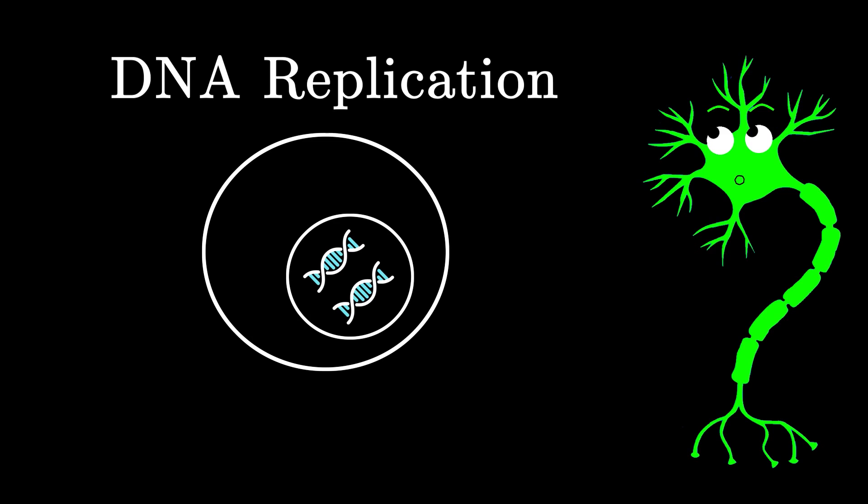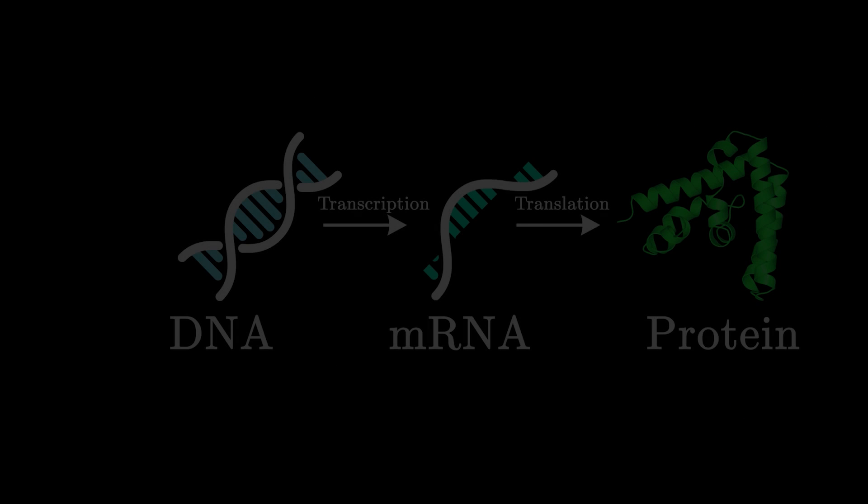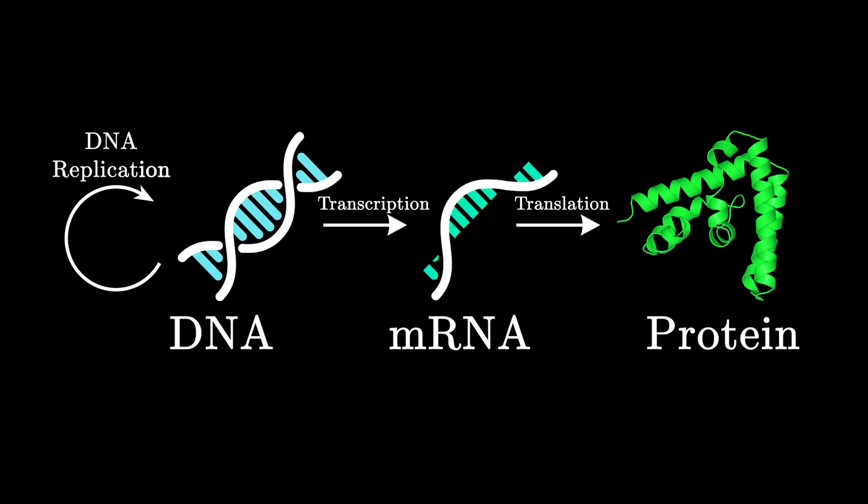Keep in mind that while in transcription, the cell only copied the specific recipe or gene that it needed, in DNA replication, the cell makes a copy of the entire genome, all its DNA. And with that, that is the final piece of our central dogma.